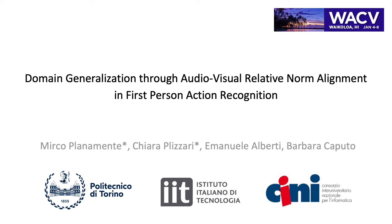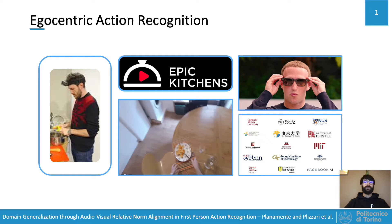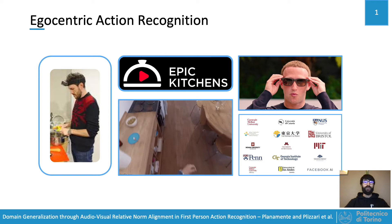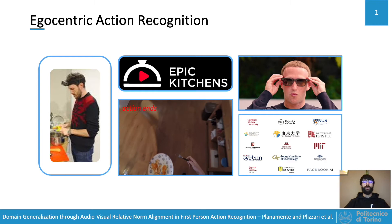Egocentric action recognition consists of working on data that are recorded by the user itself. The interest of the community grew very rapidly in the last year thanks to the release of the large-scale dataset Epic Kitchen, and due to the advancement of new wearable devices and the continuous effort of various universities and companies to collect new data.